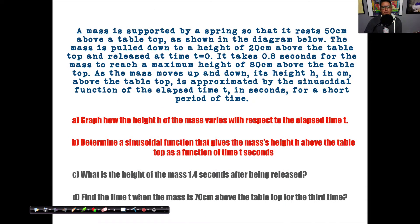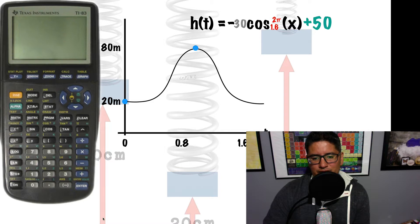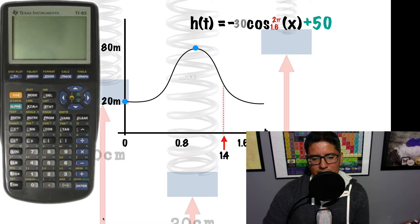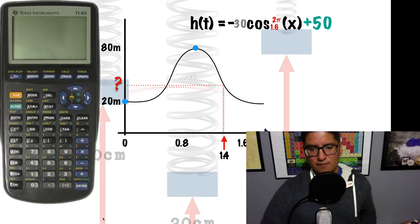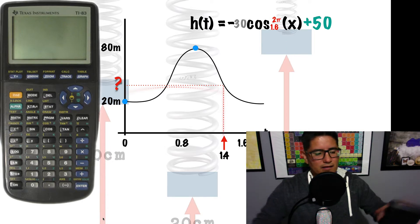Now with that function established, I can focus on part c: what is the height of the mass at 1.4 seconds after being released? Looking at my graph from 0 to 1.6 — that's a complete period, a complete cycle. I'm looking for the height at 1.4 seconds. If I replace x in my function with 1.4, that will give me h(t). I want to show you on a calculator what that's going to look like.